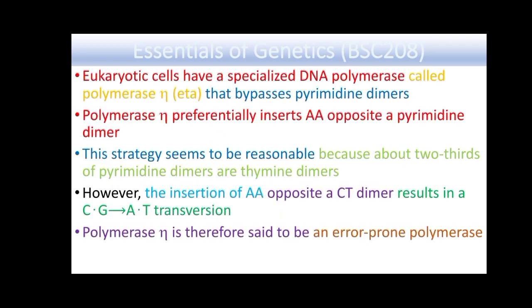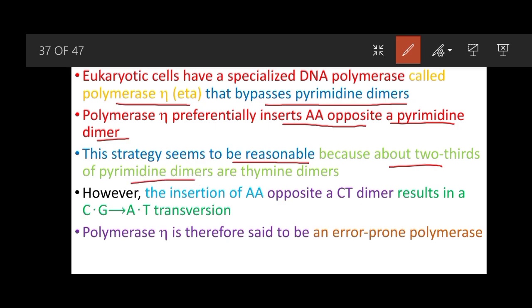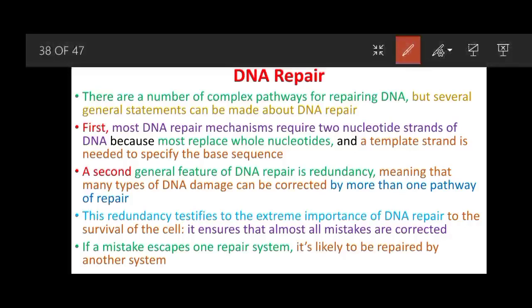Eukaryotic cells have a specialized DNA polymerase called polymerase eta that bypasses pyrimidine dimers. It preferentially inserts double adenine (AA) opposite a pyrimidine dimer. This strategy is reasonable because about two-thirds of pyrimidine dimers are thymine dimers; however, insertion of double A opposite a C-A dimer will result in a C-to-G transversion. Therefore polymerase eta is considered an error-prone polymerase, not an error-free polymerase.